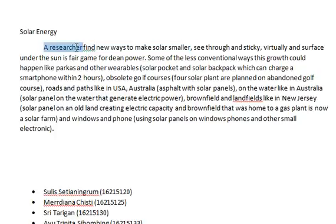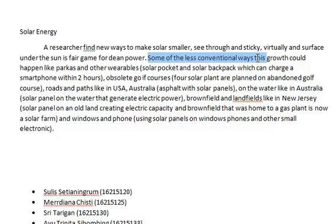For example, 'researchers find new ways to make solar panels smaller' — it should be 'solar panels' here. And 'some of the less conventional ways' is not clear. Think about that critically and make a good sentence that captures the whole text. The keywords I give you are: solar panel and unusual places, or unique places. Think about that — thank you.